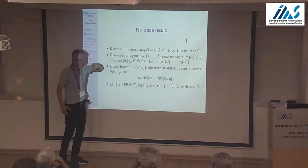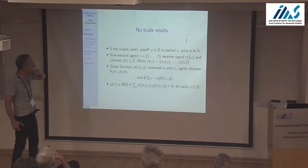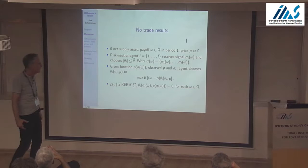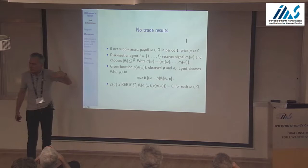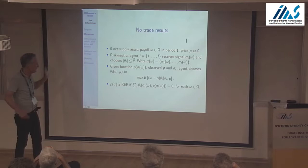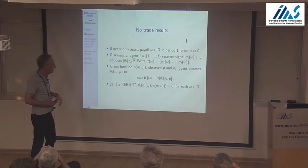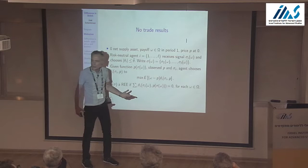I'm going to start with a model with an asset in zero net supply — one of those inside assets. There's a payoff next period, a price P at time zero, and a bunch of risk-neutral agents that receive a signal. They can choose any position provided they don't exceed a certain absolute value. They can go long and short up to a certain total absolute value.